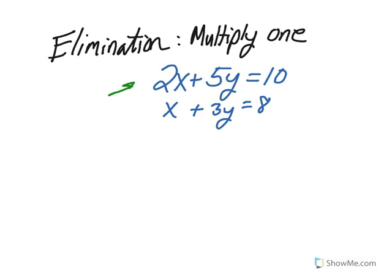In the first equation, we notice 2x and x have different coefficients. We also notice that 5y and 3y have different coefficients. In order to get them to be the same, we have to multiply the bottom equation by something so that we can make the 2x a 2x in the bottom equation.